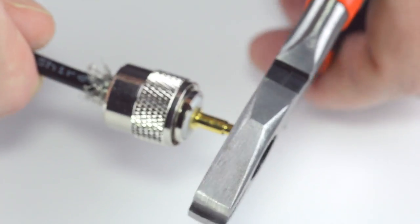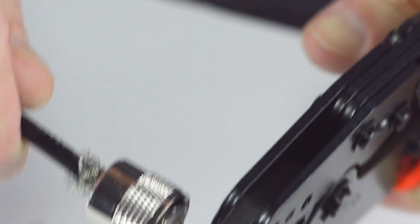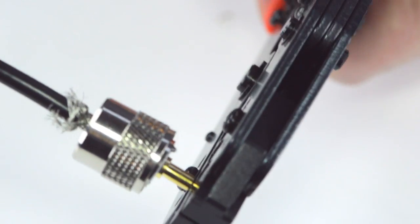Then, trim off any excess conductor. Crimp the center pin at the narrow end point to make termination to the center conductor.